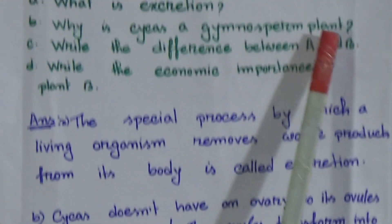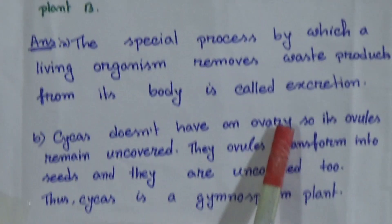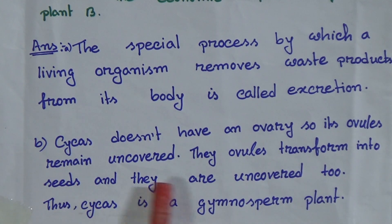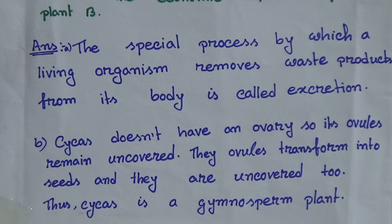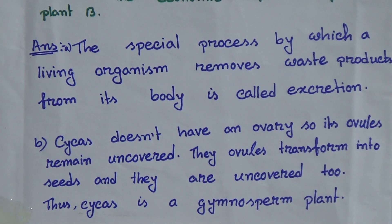Question B: why is Cycas a gymnosperm plant? Cycas does not have an ovary, so its ovules remain uncovered. The ovules transform into seeds and they are uncovered too. That's why Cycas is a gymnosperm plant. Normally, the seed of any fruit or tree remains inside its fruit — it is covered. But in the case of Cycas, or gymnosperm plants, their seeds are not covered. They are uncovered, and that's why they are called gymnosperm plants.